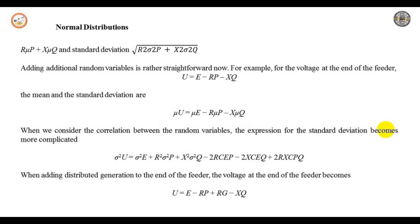Adding additional random variables is straightforward. For voltage at the end of the feeder, U = E - R·P - X·Q, the mean is μ_U = μ_E - R·μ_P - X·μ_Q. When considering correlation between random variables, the expression for standard deviation becomes: ρ²_U = ρ²_E + R²ρ²_P + X²ρ²_Q - 2R·C(E,P) - 2X·C(E,Q) + 2RX·C(P,Q).